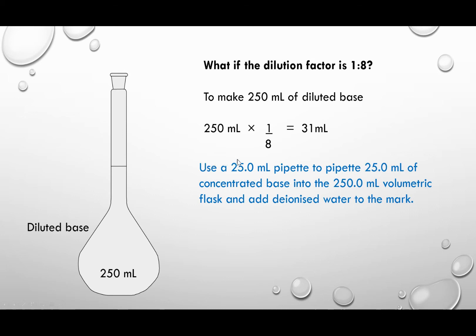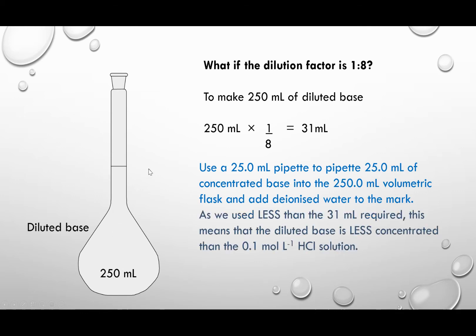So we're going to use a 25 mL pipette and we're going to take 25 mL of our concentrated window cleaner into our volumetric flask, make up to the mark with deionized water.